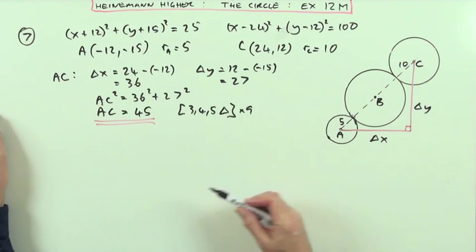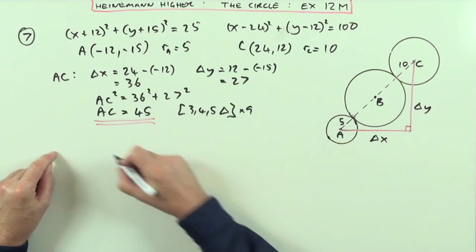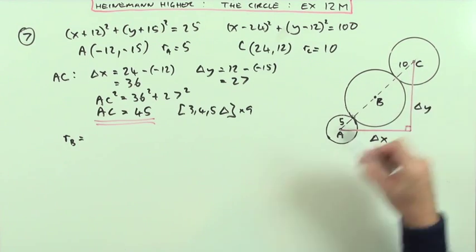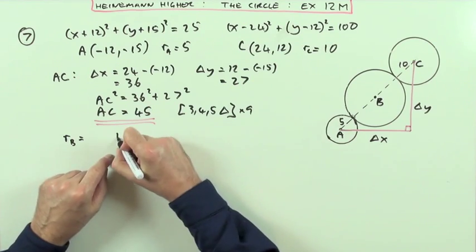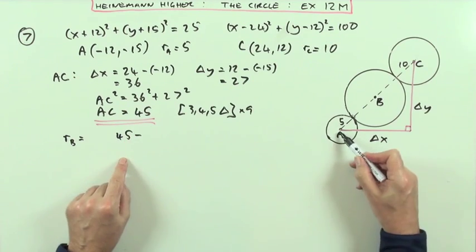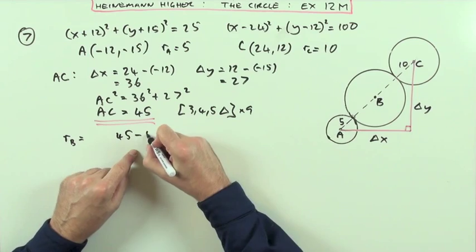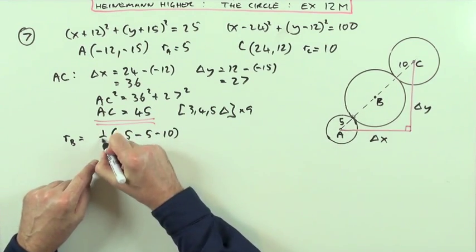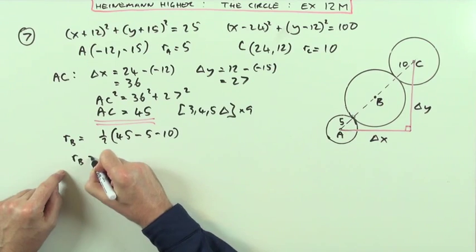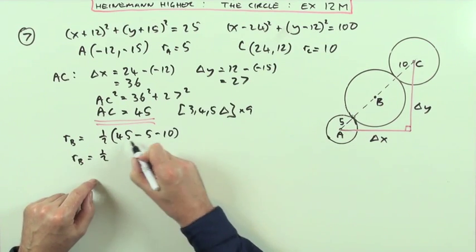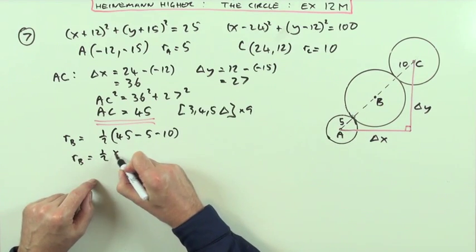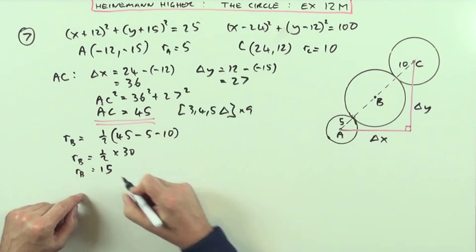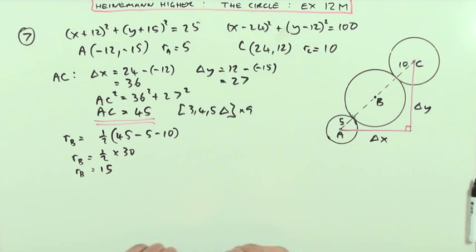Now I can work out the radius of circle B. The whole distance AC is 45. I subtract the radius of A (5) and the radius of C (10) from each end — that's taking away 5 and 10 — leaving 30 as the diameter. So the radius of B is half of 30, which is 15.